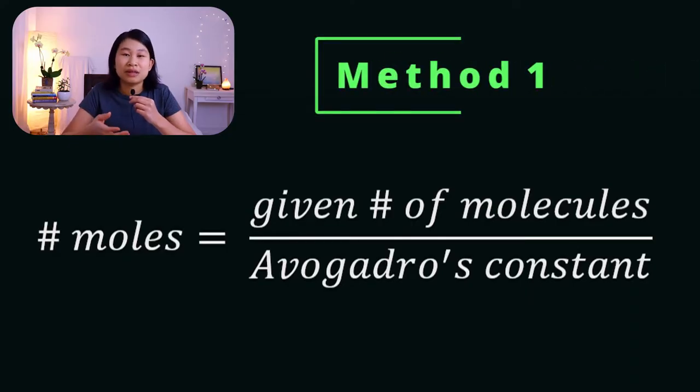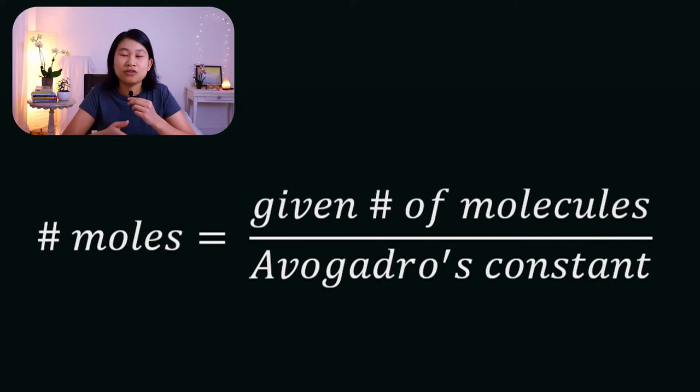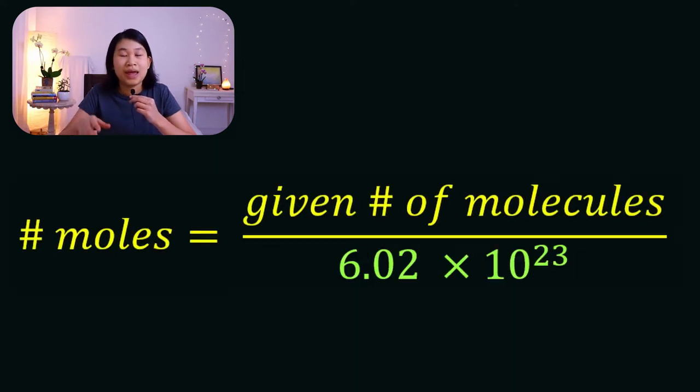Method number one uses this equation. This simply says that in order to find the number of moles, we're going to take the given number of molecules and divide by Avogadro's number. And in this video, I'm going to use 6.02 times 10 to the 23 as Avogadro's number. Now let's try method number one on two examples.